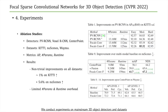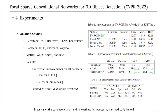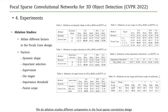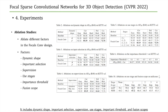We conduct experiments on mainstream 3D object detectors and datasets, measuring our methods in terms of accuracy, model size, and runtime. The results present non-trivial improvements on all datasets, while the parameter and runtime overhead introduced by our method is limited. We also do ablation studies on different components of the focal sparse convolution design, including dynamic shape, important selection, supervision, use stages, important threshold, and fusion scopes. Detailed settings are available in the paper.